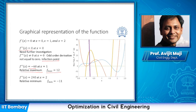The last point obtained was x = 2. At x = 2, looking into the second order derivative, we find a non-zero value of positive 240. Since 240 is positive, we are getting a relative minimum point where the function value is negative 11.